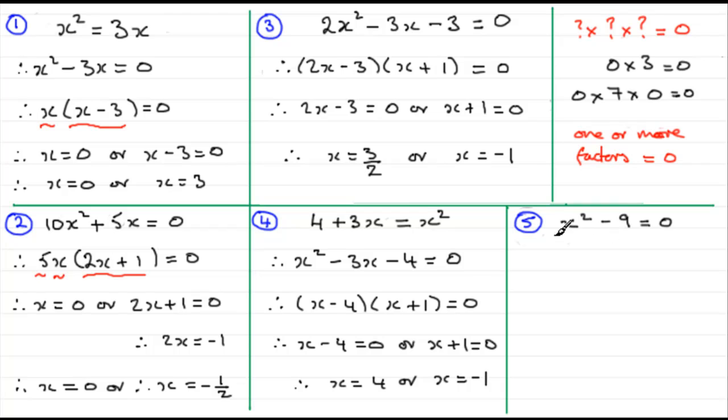But what you could do is factorise this. Now this is the difference of two squares. So I'm assuming you're familiar with that. And that would be x + 3 multiplied by x - 3. And that would equal zero. Then either factor would equal zero. So you've got x + 3 = 0 or x - 3 = 0. Then if you subtract 3 from both sides, you get x = -3. And on this one, if you add 3 to both sides, you get x = 3.